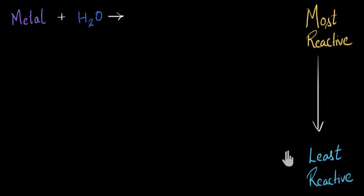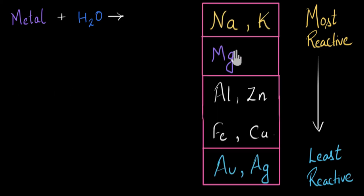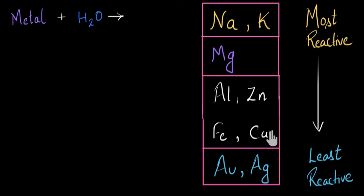You might recall that in a previous video we attempted something similar — we reacted metals with oxygen and depending on how vigorously they reacted, we arrived at a particular list. Here sodium and potassium were most reactive and gold and silver were the least reactive. But there was a problem with this list: at rank three you can find four metals grouped together. We weren't able to sub-rank them. So our hope with this new experiment is that we will arrive at a more detailed, more well-organized list.